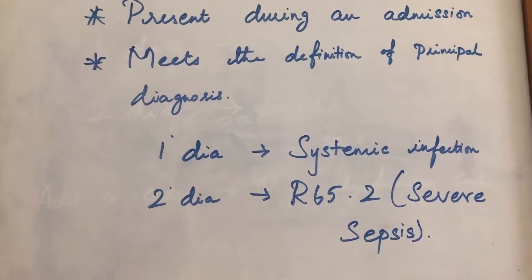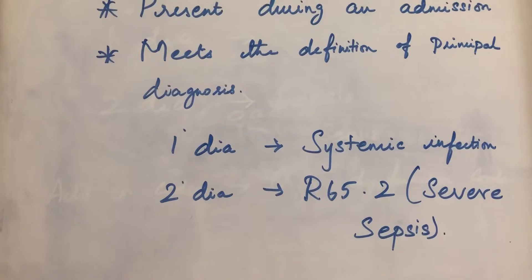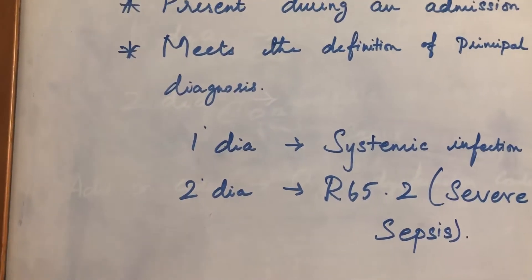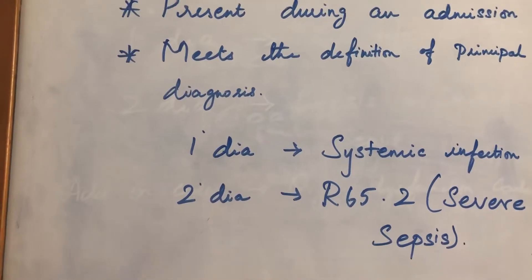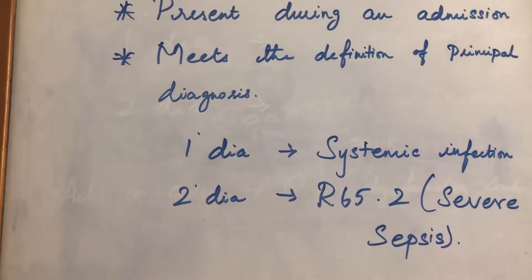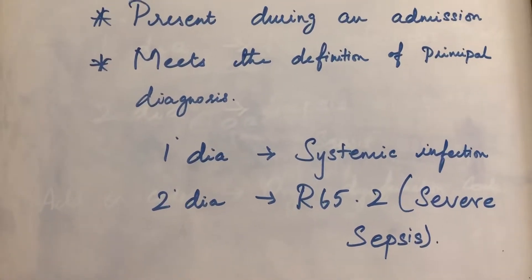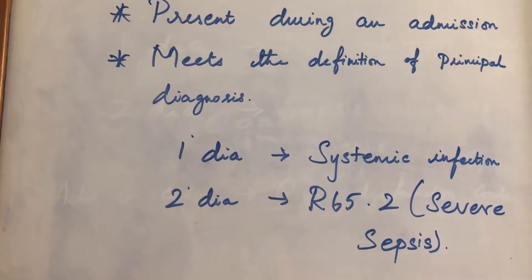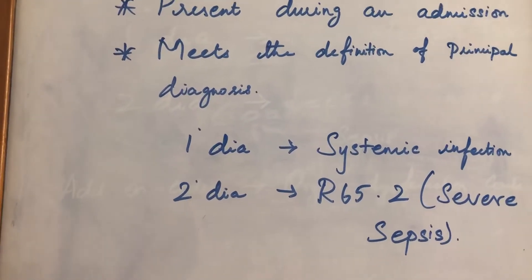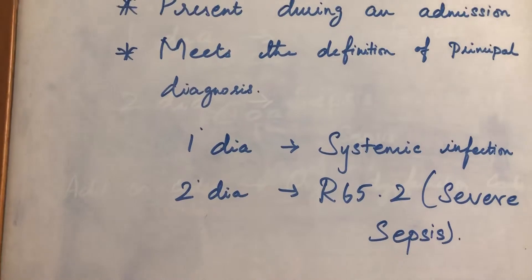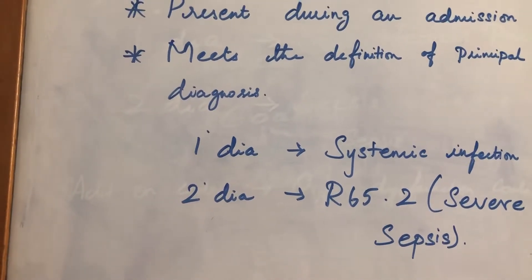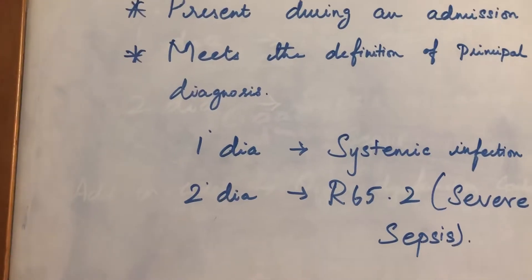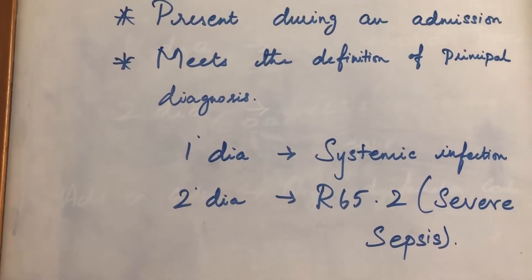This is a coding tip, especially for the AAPC exam. The Severe Sepsis code is easy to find. When Severe Sepsis is the question, the Severe Sepsis code comes first. The Severe Sepsis code is the principal diagnosis, followed by the additional codes.